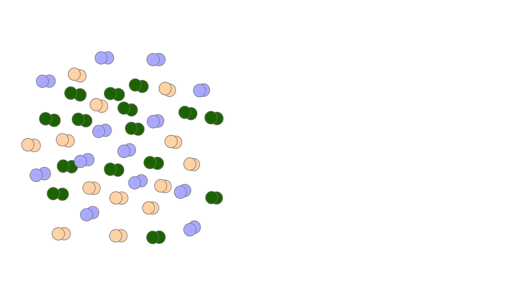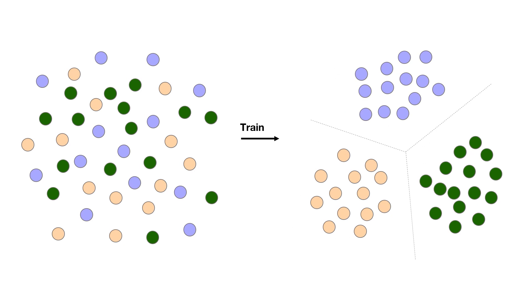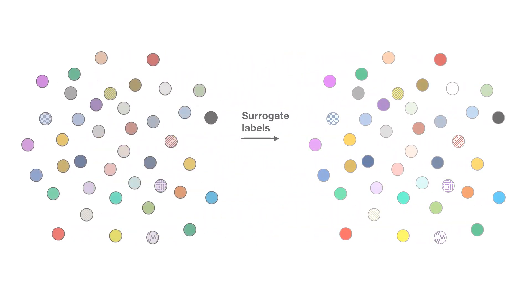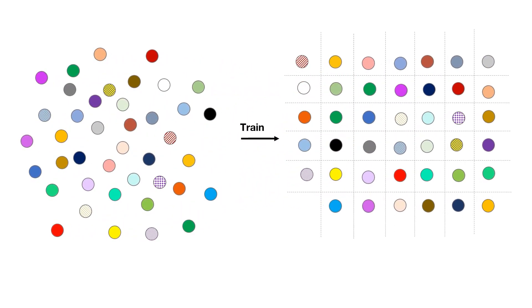We have a dataset of images. If we have ground truth class labels, we can train a network to classify images using those labels — this is the supervised training scenario. But what if we don't have labels and want to make sense of the data without any manual annotations? The trivial solution is to assign a unique surrogate label to every sample and train using supervised techniques, but we would have only one positive per class with many negatives, and no way to model intra-class variance. What can we do instead?